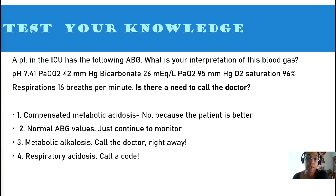We're going to practice some NCLEX questions. Just a few questions to see if you could put this into context. We have a patient in the ICU. He has ABG. What is your interpretation? Our pH is 7.41. CO2 is 42. Bicarb is 26. The PaO2 is 95%. And, his O2 saturation is 96. Respiratory, he's breathing at 16 breaths per minute. Is there a reason to call the doctor based on this ABG?